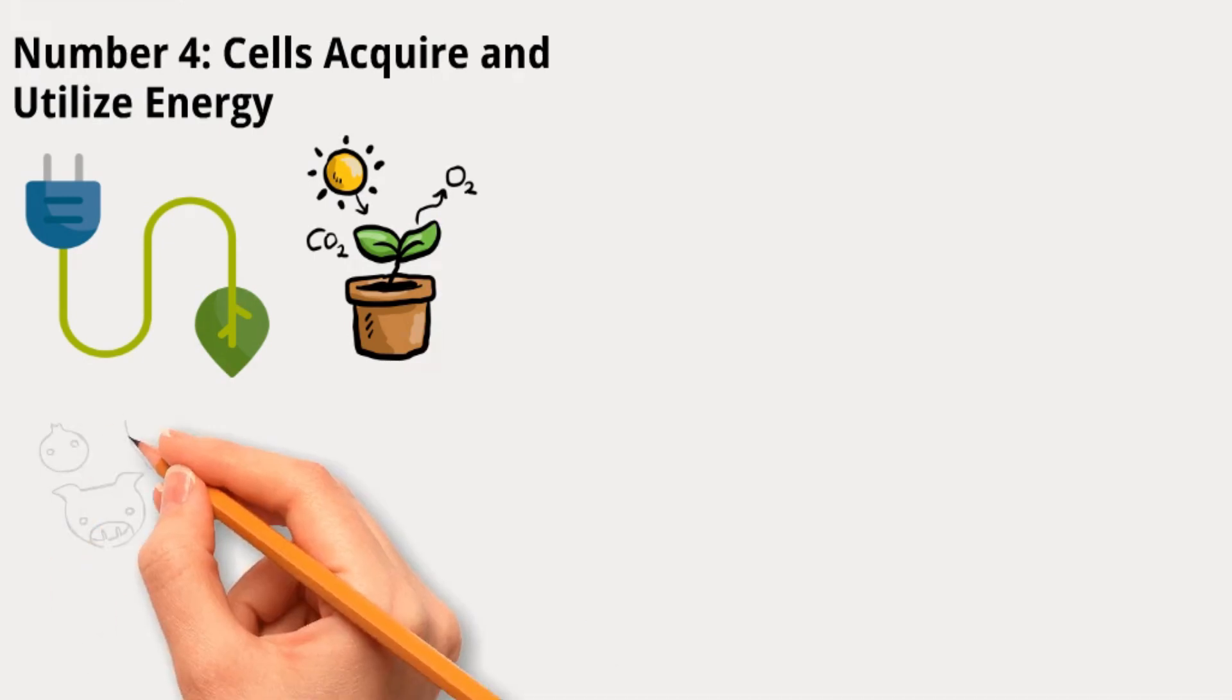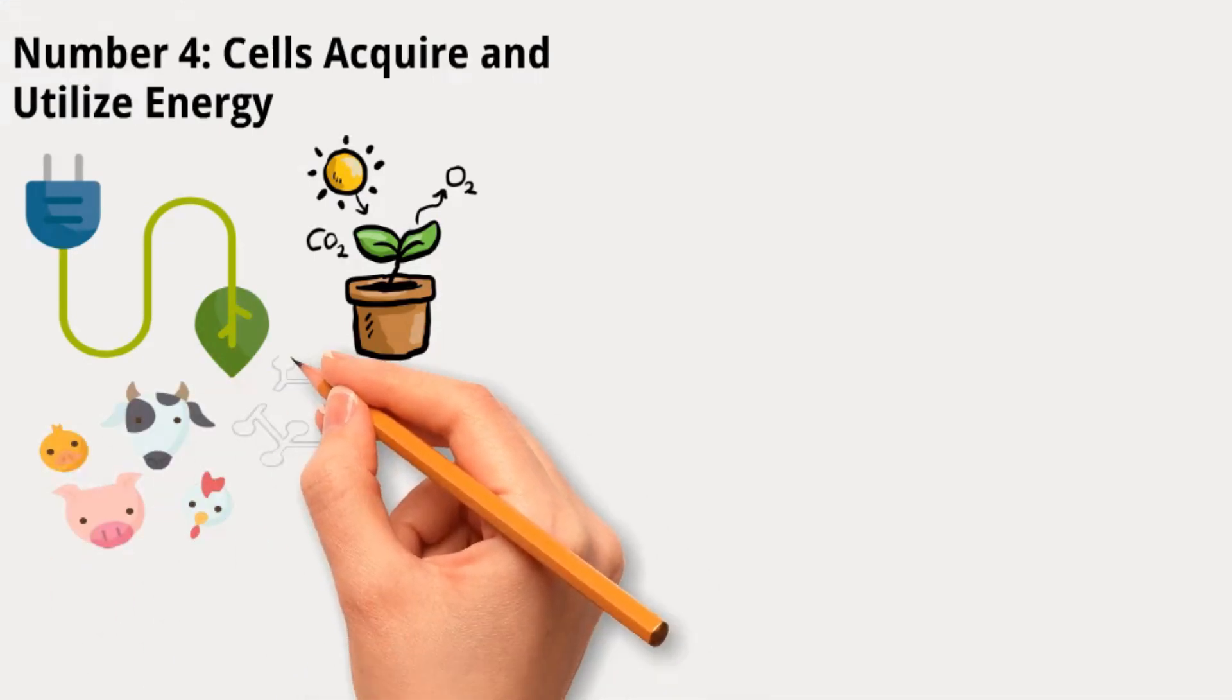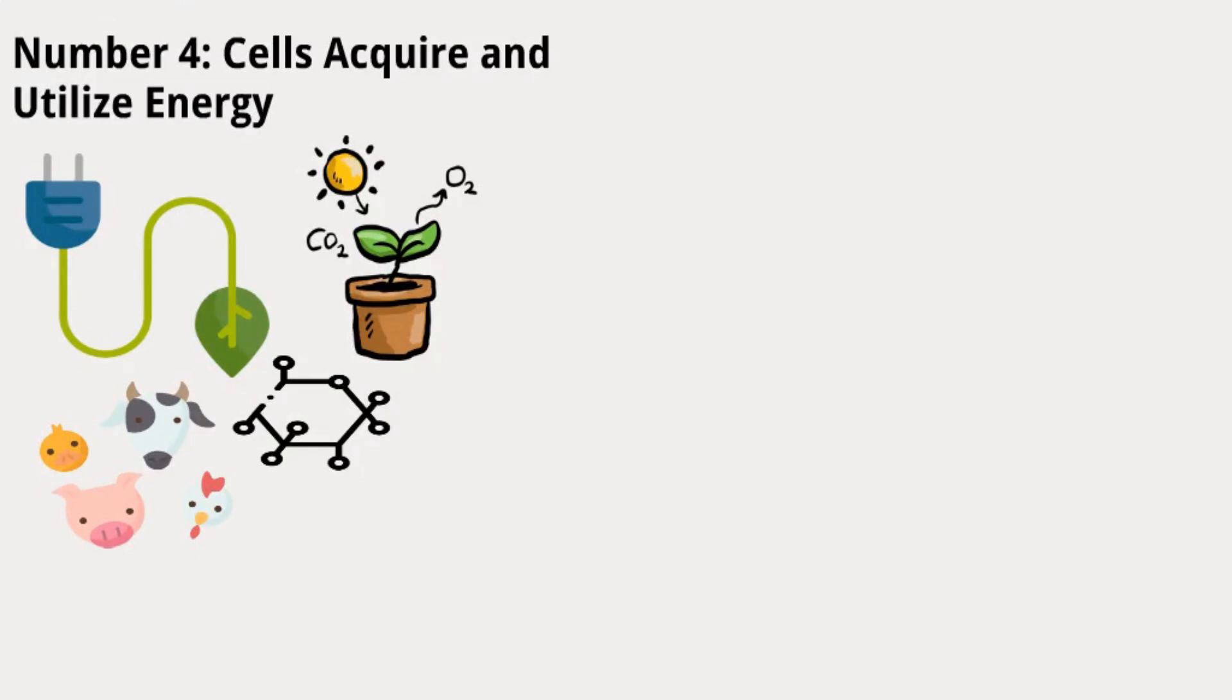In animals including humans, energy often comes in the form of glucose, a sugar released into the bloodstream by the liver. Inside cells, glucose is broken down into a form called ATP, which is like a cellular energy currency.